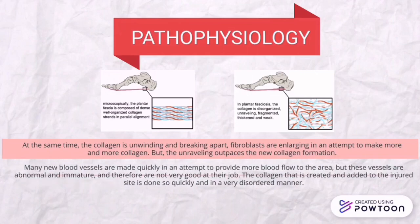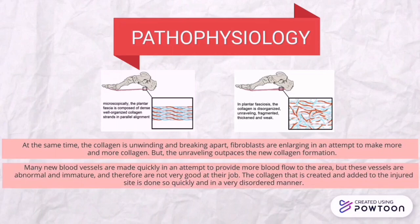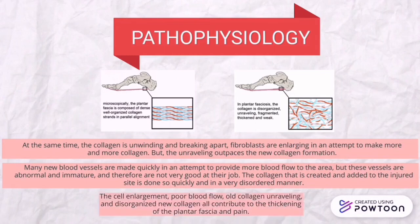Many new blood vessels are made quickly in an attempt to provide more blood flow to the area, but these vessels are abnormal and immature and therefore are not very effective. The collagen that is created and added to the injured site is done so quickly and in a very disordered manner. Cell enlargement, blood flow changes, collagen unraveling, and disorganized new collagen formation all contribute to the thickening of the plantar fascia and pain.